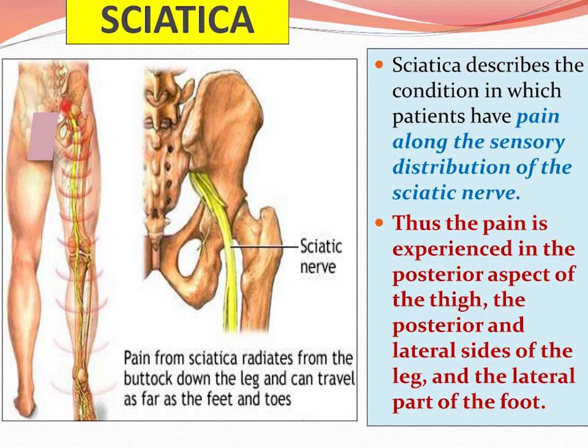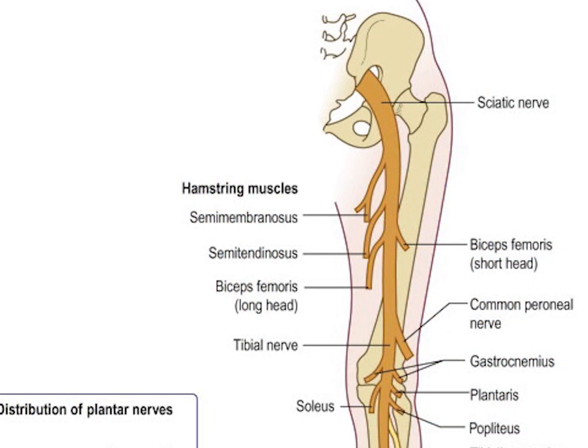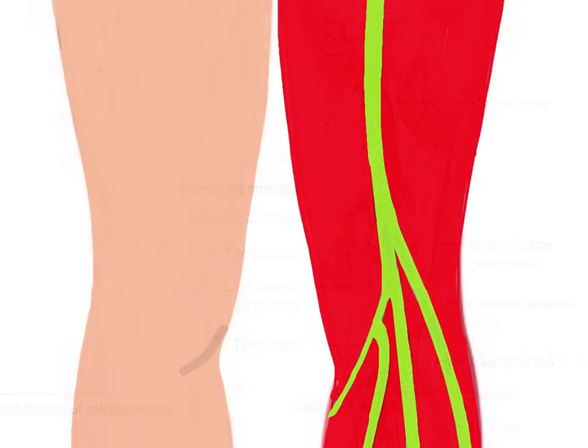Hello my friends. The sciatic nerve is the largest nerve in the human body. The sciatic nerve, also called the ischiotic nerve, is a large nerve in humans and other vertebrate animals which is the largest branch of the sacral plexus and runs alongside the hip joint and down the lower limb. It is the longest and widest single nerve in the human body, going from the top of the leg to the foot on the posterior aspect.